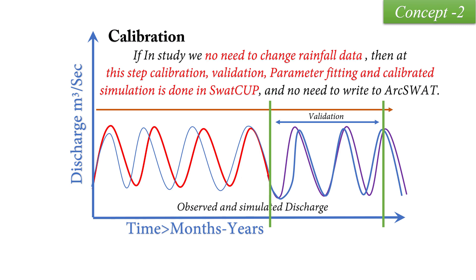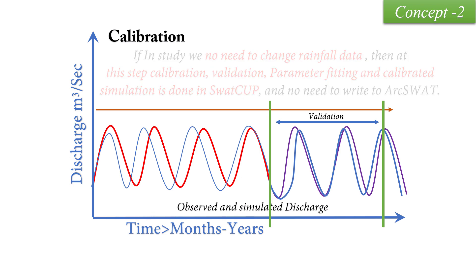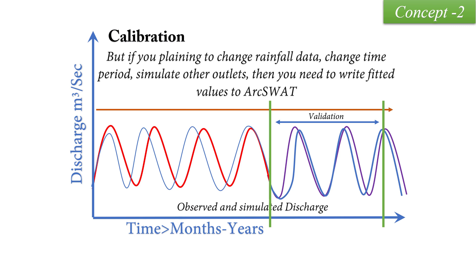We do not need to go back to ArcSWAT again. At this step, our project is completed and we have a calibrated SWAT-CUP model, or calibrated hydrological model. But we need to write this value into SWAT if we are planning to change the rainfall data, change the time period, or simulate some other outlet of the watershed where we have no observed data but want to use the same fitted parameters — then we write that fitted value to ArcSWAT.